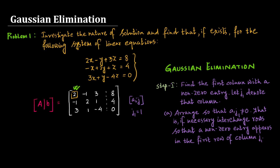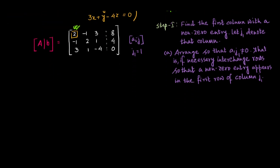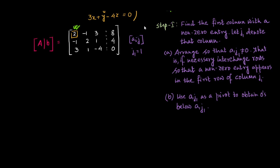For this example, the first column containing a non-zero entry is column 1, so J1 equals 1. All entries in column 1 are non-zero, and we already have a non-zero entry, 2, in the first row. As per the echelon form requirement, all entries below the pivot should be zero, so we use A(1,J1) = 2 as the pivot to obtain zeros below it.